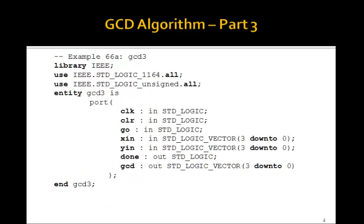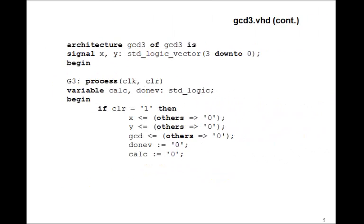So let's see how this applies to the GCD algorithm. I'm going to call this GCD3. This is our third attempt at the GCD algorithm. We'll have CLOCK and CLEAR as inputs, GO as an input. XIN and YIN will be the two inputs that we're trying to find the greatest common divisor of. DUN is an output, and then the 4-bit GCD will be an output. So let's follow our technique. We'll define the signals X and Y, 3 down to 0. Here's our process CLOCK and CLEAR. We've got a variable CALC and DUNV. If CLEAR is 1, we'll set X to 0, Y to 0, GCD to 0, DUN variable to 0, CALC to 0.